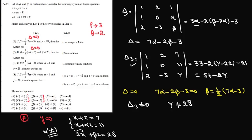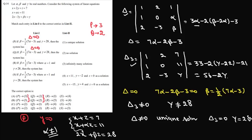So p matches with 3 and q matches with 2. Now we'll consider the cases where delta is not equal to zero. When delta is not equal to zero, we'll have a unique solution. When delta 3 is equal to zero, that happens when gamma equals 28. We know the value of z must be equal to zero.